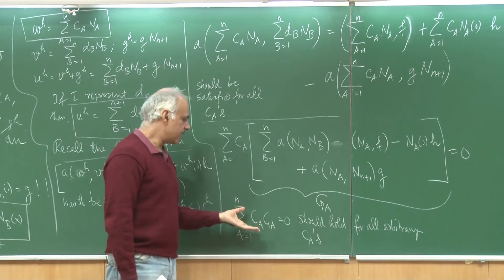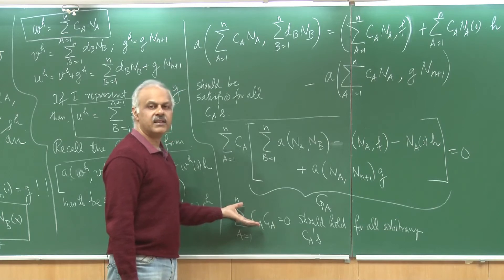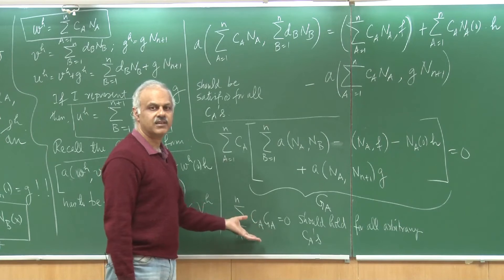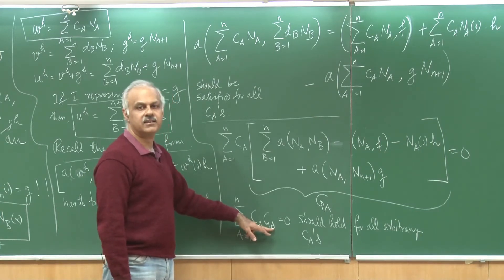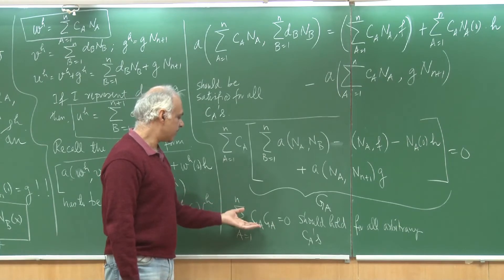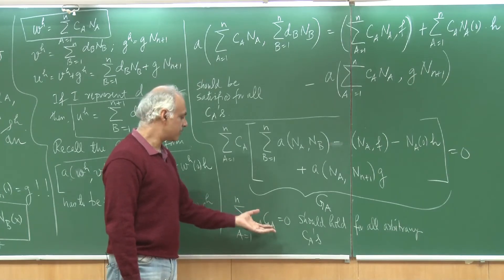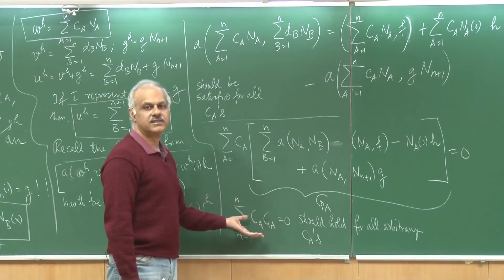I can now start arguing that maybe I take c_1 as 1 and the other constants like c_2, c_3, c_4, all of them to 0 and then this equation will give me g_1 would be 0. Next I can again take an arbitrary combination where c_1 is 0, c_2 is 1, c_3, c_4 all the way to c_n are 0 and then I would generate an equation that g_2 is 0.